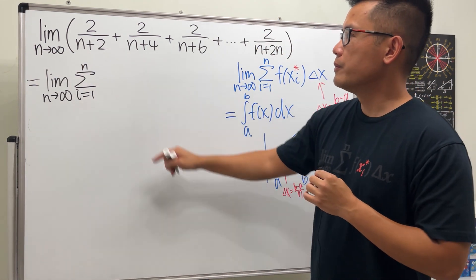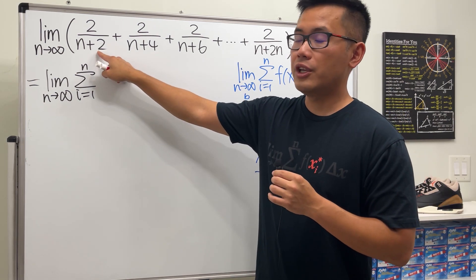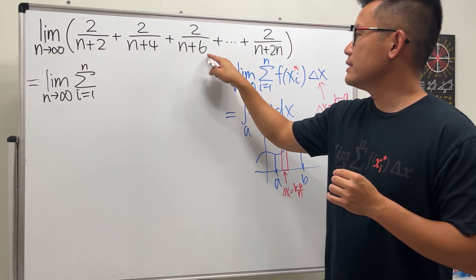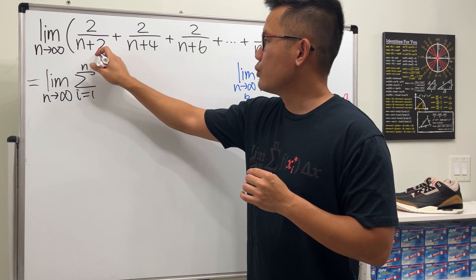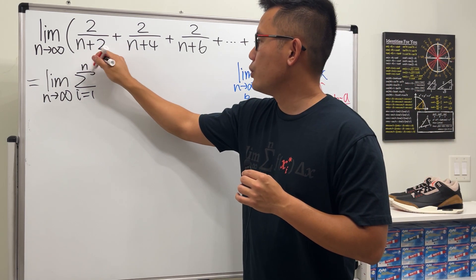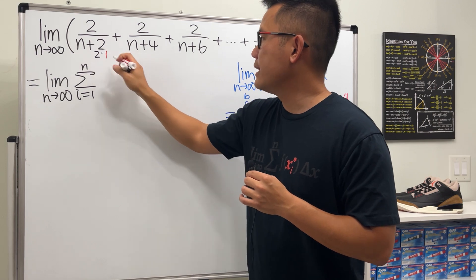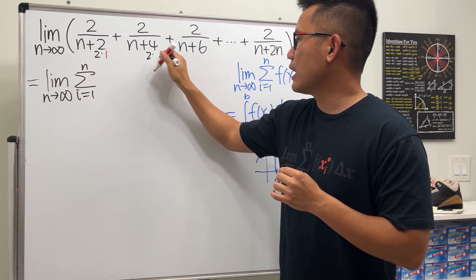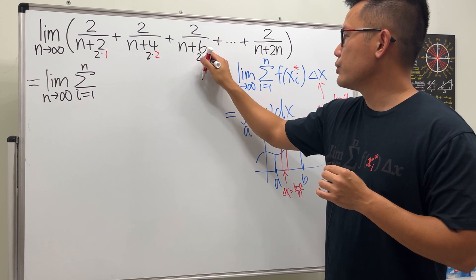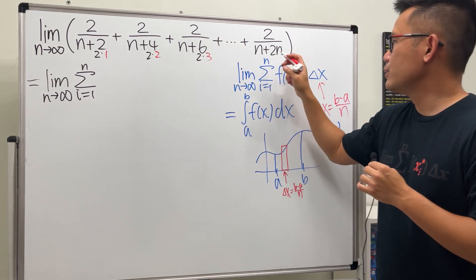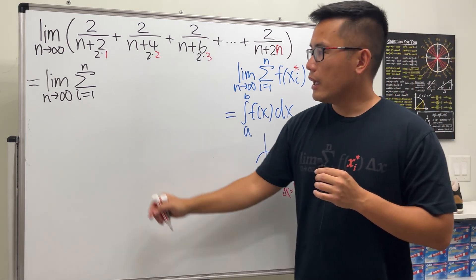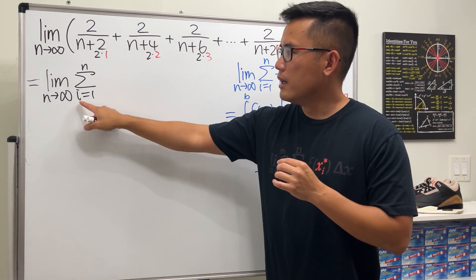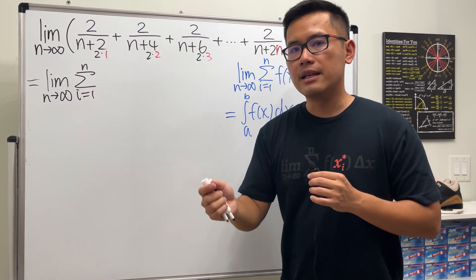But what exactly is the i? We have to pay attention to what are the things that are changing. 2, 4, 6, so on up to 2n. So pay attention to the 2 right here. This 2 means we have 2 times 1, and then the 4 means 2 times 2, and then the 6 means 2 times 3, and then lastly we have 2 times n.